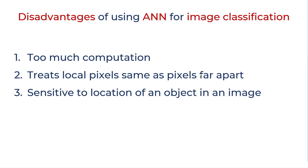So the disadvantages of using ANN or artificial neural network for image classification is too much computation. It also treats local pixels same as pixels far apart. If you have koala's face in a left corner versus right corner, it is still a koala, doesn't matter where the face is located.